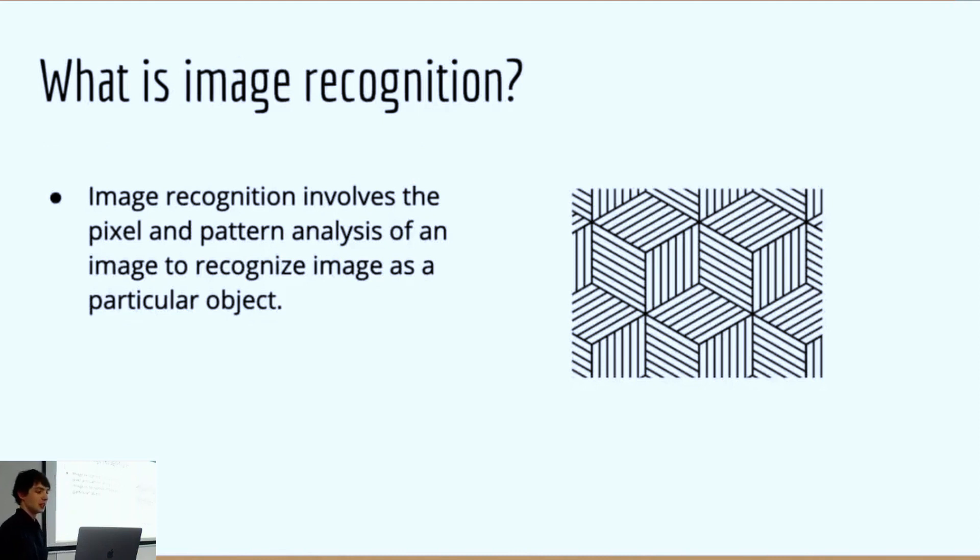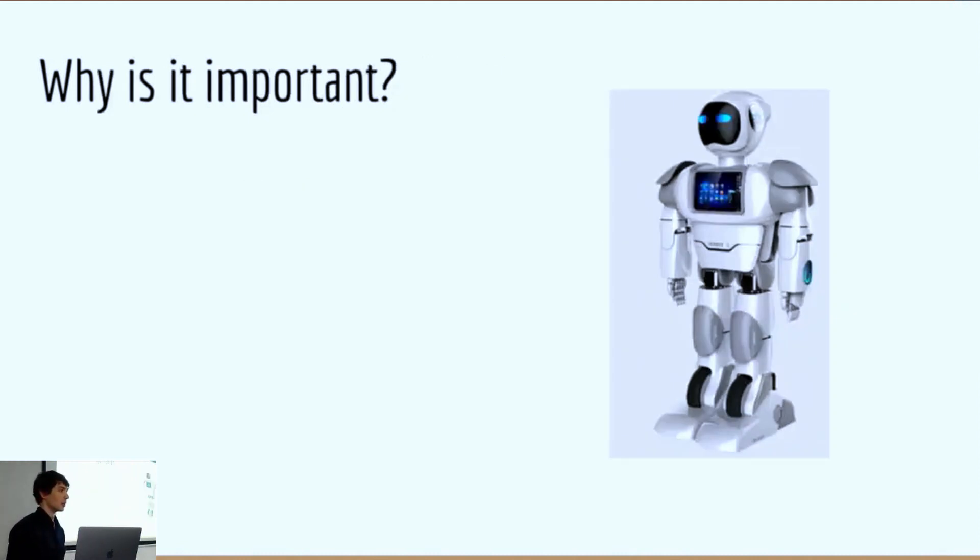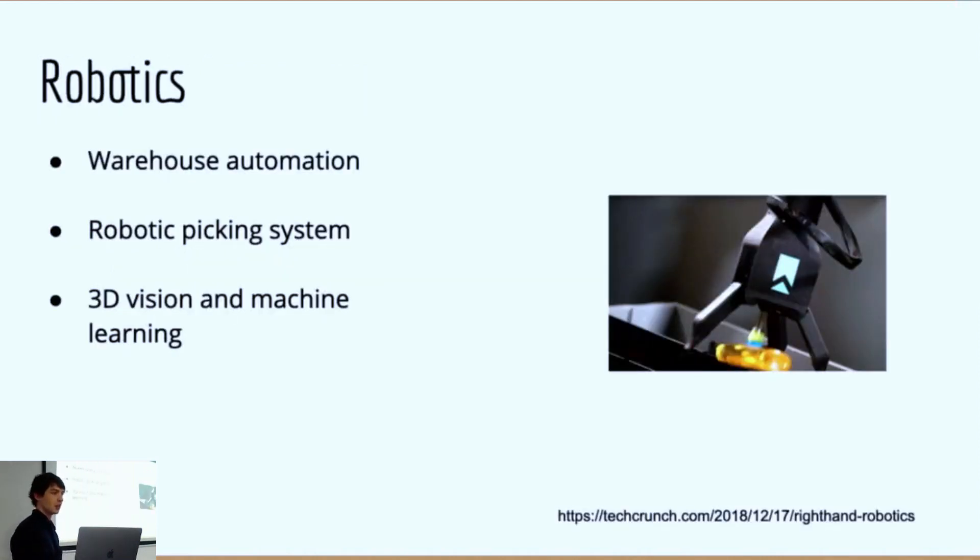Image recognition involves analyzing the pixels and the patterns within an image. When we recognize an image, we can then identify core features as a particular object. So why is it important? There are a huge amount of applications. It's quite a happening field at the moment. One of them is robotics. Increasingly we're seeing robots which are able to identify different parts in warehouses and to use 3D vision and machine learning techniques to identify different parts and to pick them up, making warehouses more efficient.